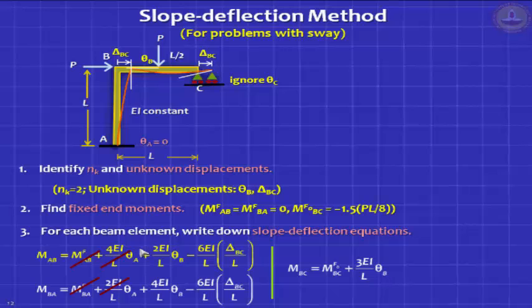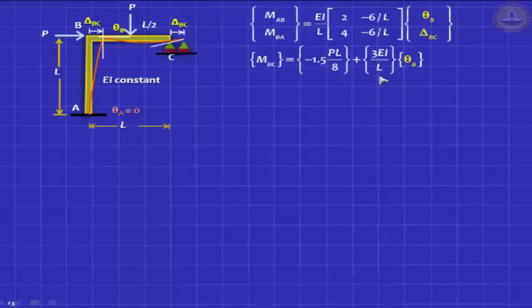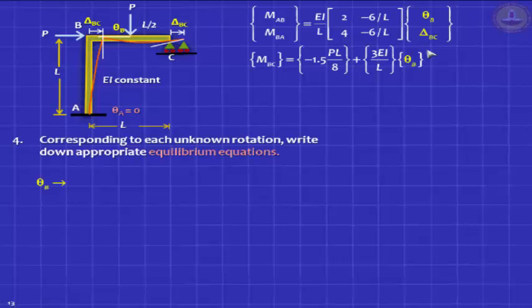Now there is a challenge, you have 2 unknowns, theta B and delta BC. You need 2 equilibrium equations. One equilibrium equation we are familiar with. So, let us first write down the slope deflection equation in a matrix form, we have got all the answers. If you know theta B, you know delta BC, you can find the solution. Very interesting, this delta BC does not affect the bending moment in the beam. This delta BC affects only M AB and M BA. But even to get this theta B, the solution is coupled with delta BC. So, you have to solve. You need 2 equations.